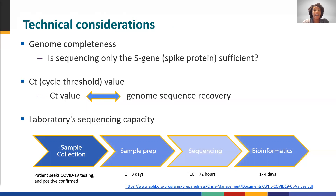This schematic is a high-level representation of the steps involved to generate sequencing data. The workflow includes both wet lab and dry lab components. The wet lab components include sample collection and sample prep, where we extract genetic material and prepare it for the sequencing library. The dry lab components include sequencing and bioinformatics analyses required to produce results useful for genomic epidemiology.